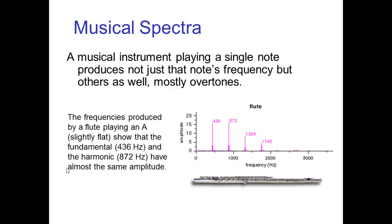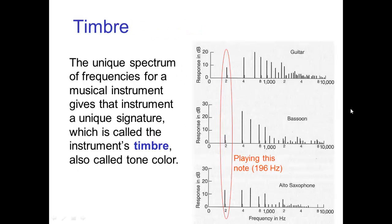Now, if we look at the spectra produced by musical instruments, even when an instrument's playing a single note, it doesn't just produce a single frequency, but it produces a spectrum of frequencies, mostly overtones of that note. So, for example, when a flute is playing the note A, which is 436 hertz, then the resulting sound waves have some amplitude at that frequency and at twice that frequency and three times that frequency and so forth.